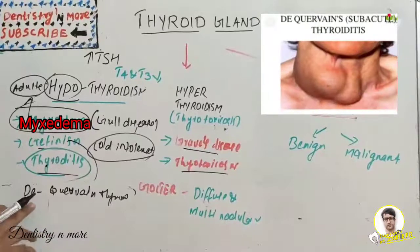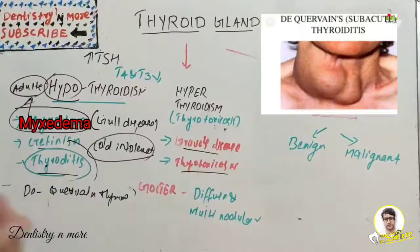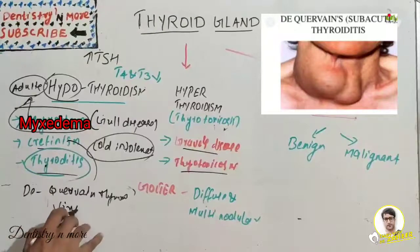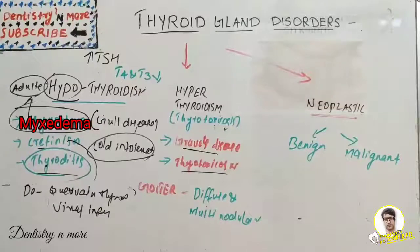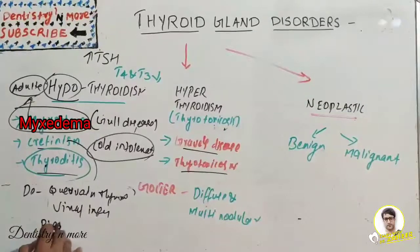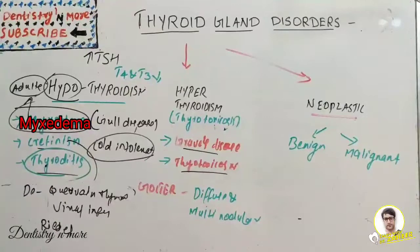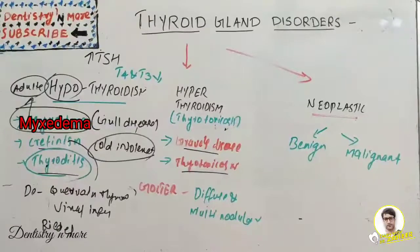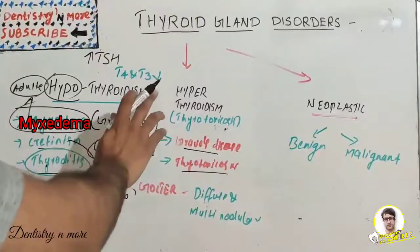Another type is de Quervain's thyroiditis, which occurs in 30–50 year olds, still with female predominance, but is caused by viral infection such as adenoviruses. We also have Riedel's thyroiditis, which is fibrosis of the thyroid and neighboring structures, subacute lymphocytic thyroiditis, and congenital hypothyroidism.